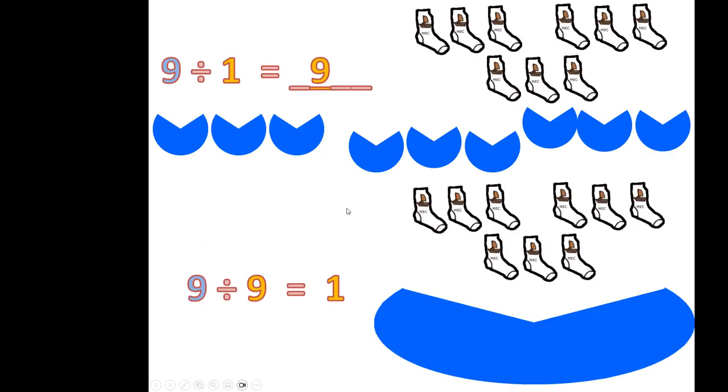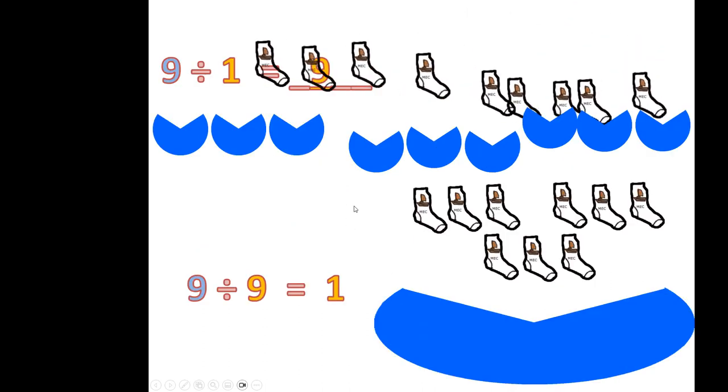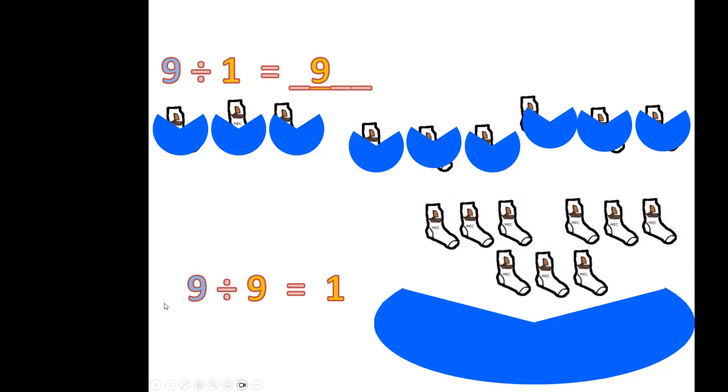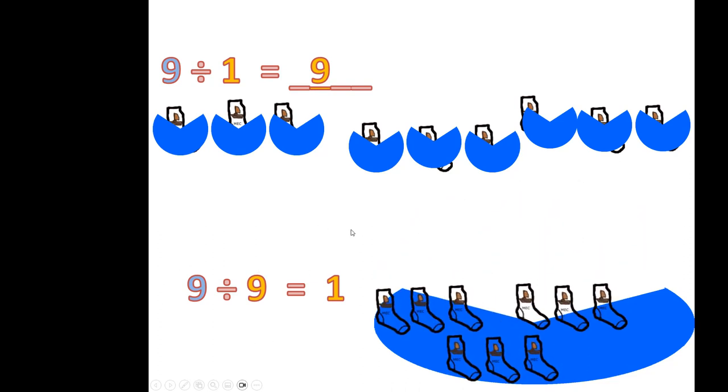Another example. Nine divided by one is nine. There are nine groups of one if I have nine socks. Nine divided by nine is one. If I have nine socks in each group, I will have one whole group.